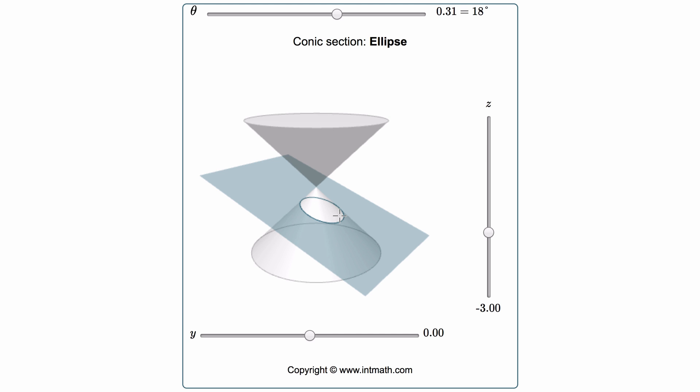Conic sections are formed when a geometric plane is cutting through a cone. When we're talking about a cone, it's a little different than what we normally think of in that it has two different sides: a top side and a bottom side. These sides are called nappes, N-A-P-P-E-S.